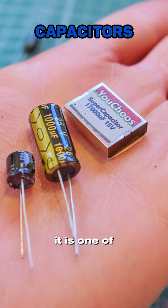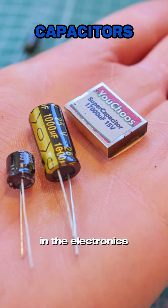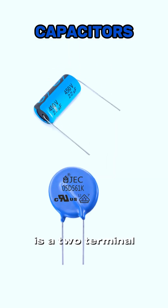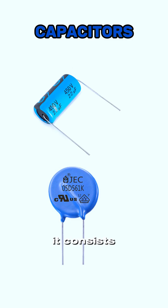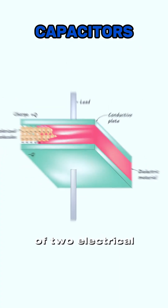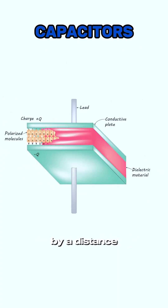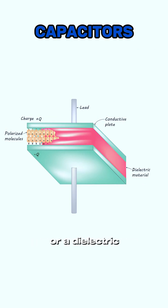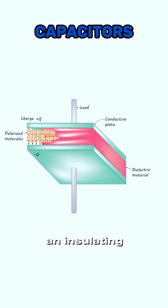This is a capacitor. It is one of the most common passive components in the electronics field. A capacitor is a two-terminal device that can store energy as an electric charge. It consists of two electrical conductors separated by a distance. The space between the conductors may be a vacuum or a dielectric, an insulating material.